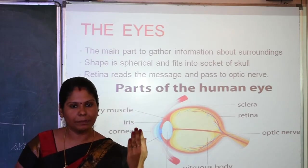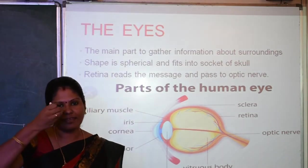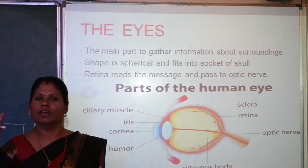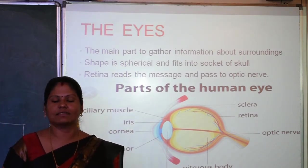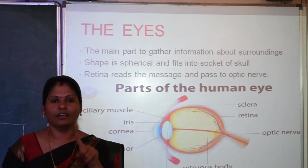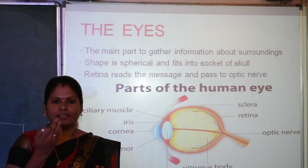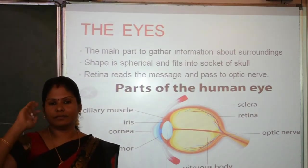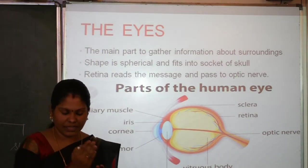When you see something, it sends the message to the optic nerve and then to the brain. For example, if your teacher says to take your notebook and read a page, your eyes read it and that information is sent to the brain so you know what you are reading.